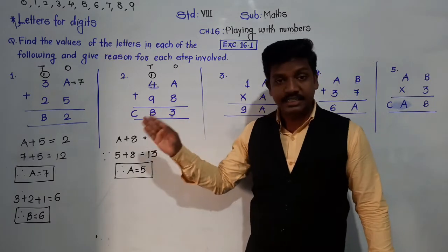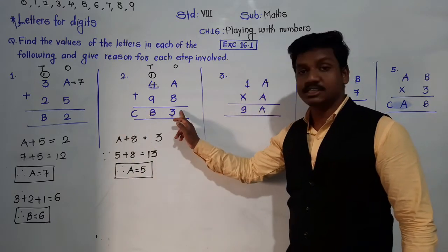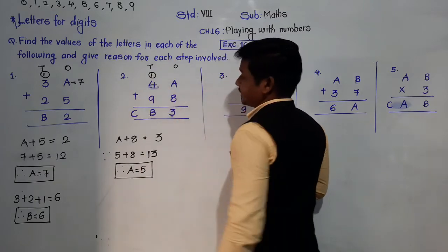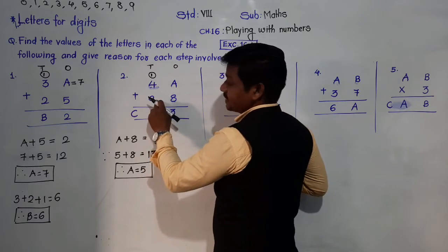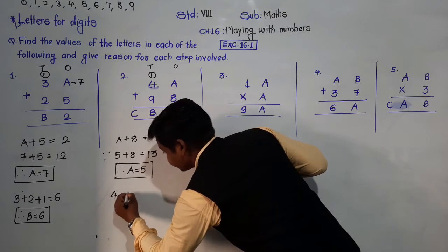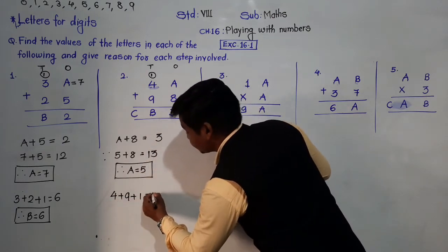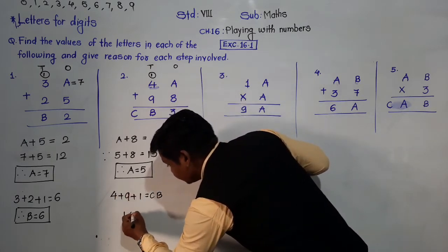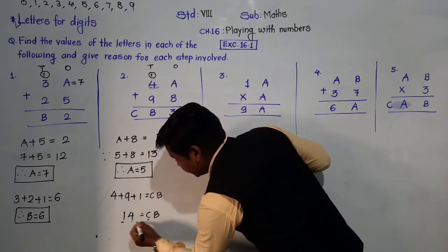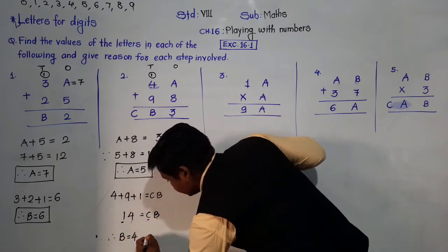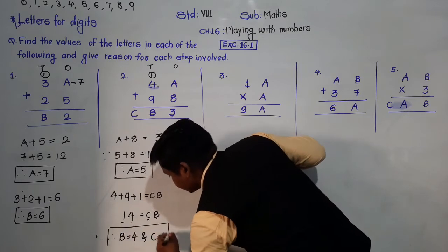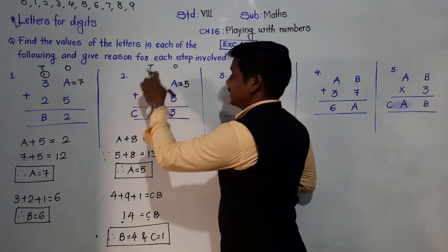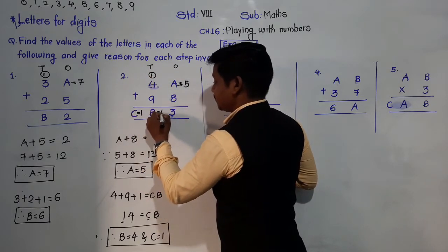Is there any other combination? No, only 5 + 8 = 13 gives 3 in the 1's place. Now in the 10's place, both digits are given: 4 + 9 + 1 carry = 14. So 14 = CD, meaning C = 1 and D = 4. Therefore A = 5, B = 4, C = 1.